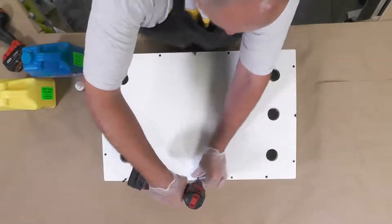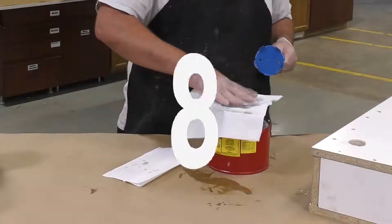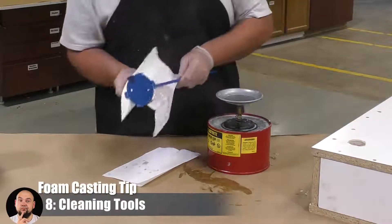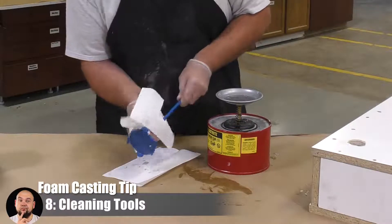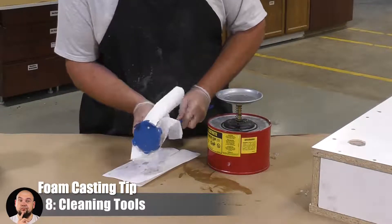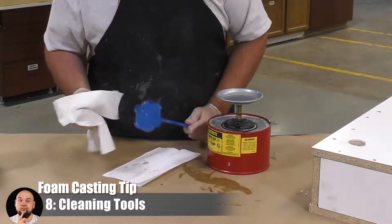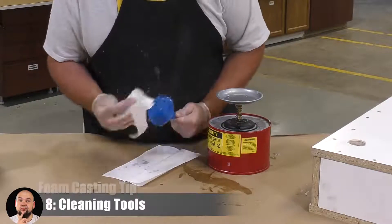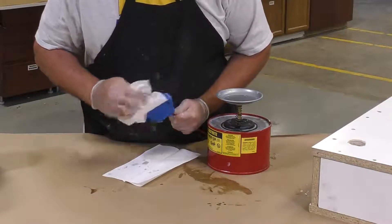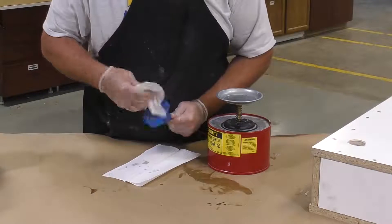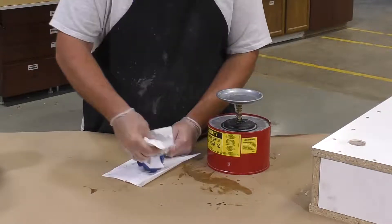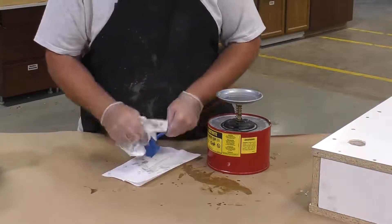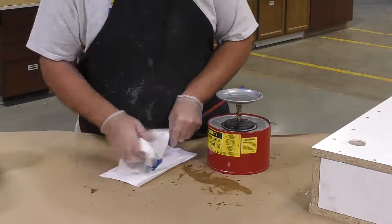Now while we're waiting for the foam to expand, we're going to take a couple seconds to clean that mechanical mixer using some denatured alcohol. This is the best time to clean your tools while the material is still liquid and fresh. When it starts to actually expand and harden, you're going to have a really tough time cleaning that off. So a little bit of precaution here goes a long way to keeping your tools clean.